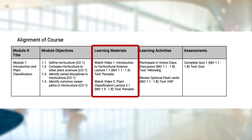In the next column the instructor lists all of the course learning materials, which are resources that contain the information learners will need. For materials, you'll show alignment with module objectives by noting the number of the module objective in parentheses. Notice that the instructor has also listed the tools learners will use to access the instructional materials.